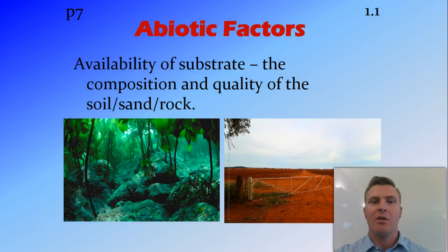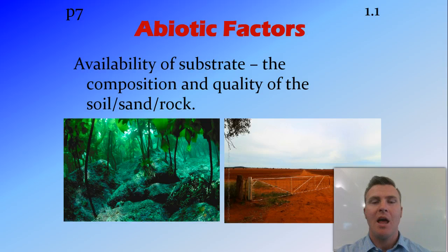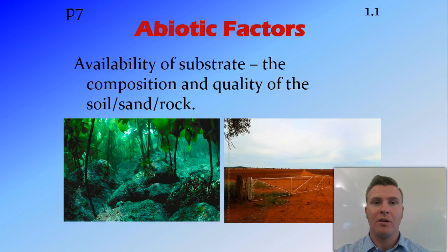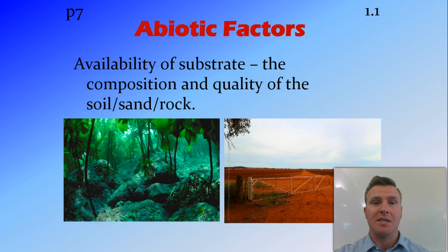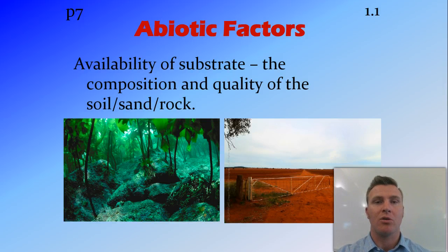Availability of substrate refers to the composition and quality of the sand, soil, or whatever it is that plants are growing in. Some soil is very good quality for growing in and some isn't, and this applies equally whether it's in an aquatic environment — the soil below the water — or in a terrestrial environment.